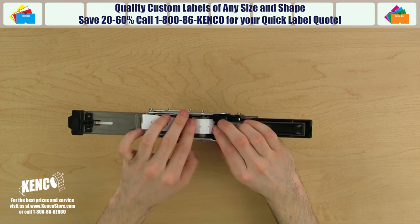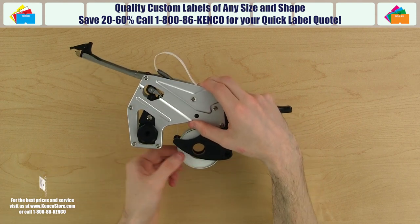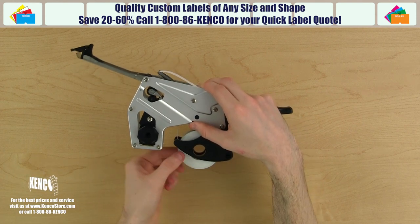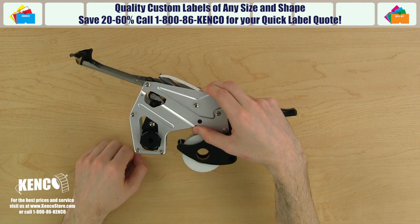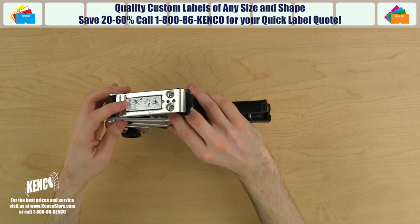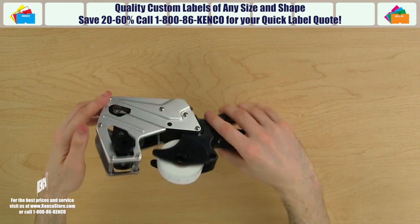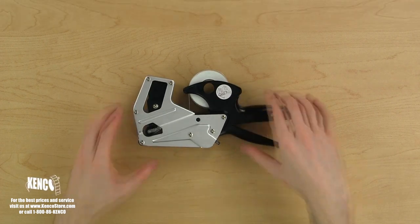When you rest the labels on the advancing mechanism, line up two of the holes on the labels with the sprockets. Sometimes we have too much slack here. If you do, hold the labels against the advancing mechanism with one hand and start rolling back the slack with the other until it's tight. Close the bottom cover tightly until you hear it click.